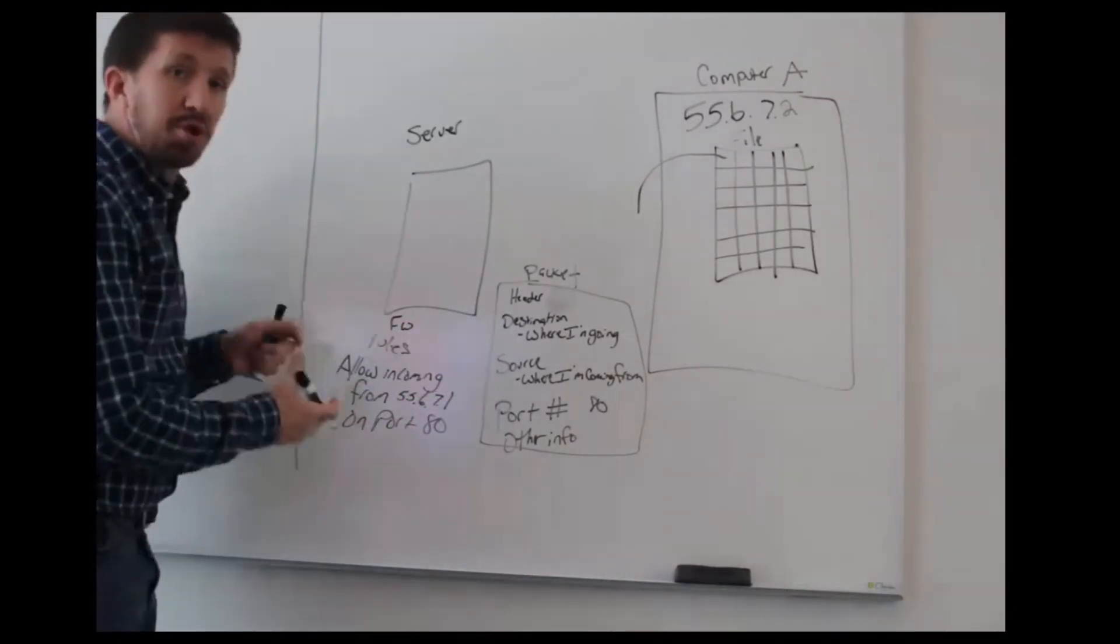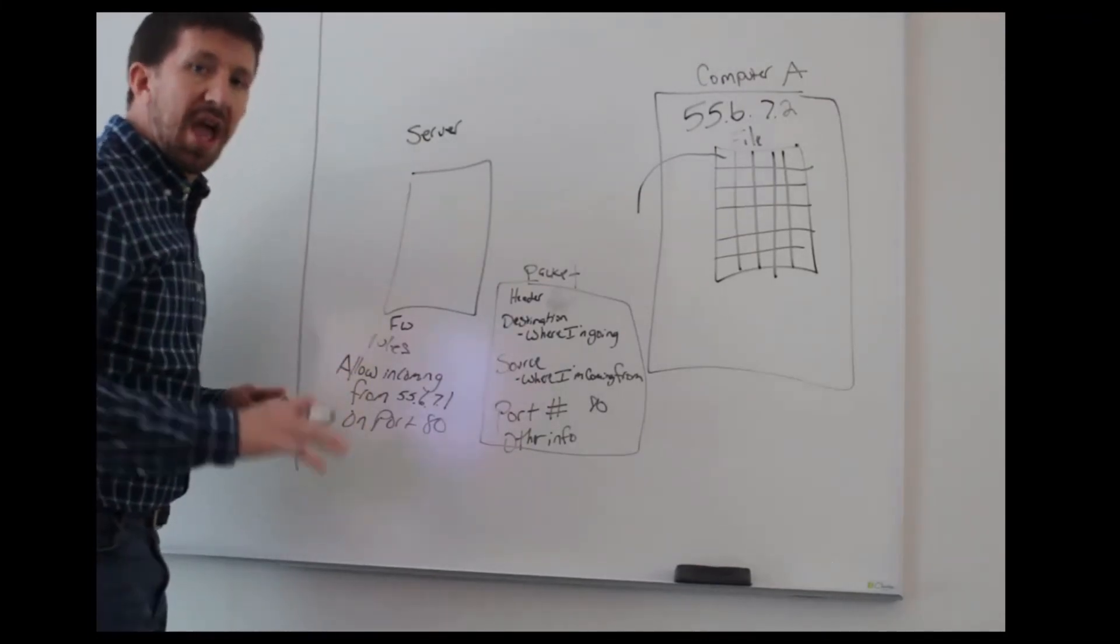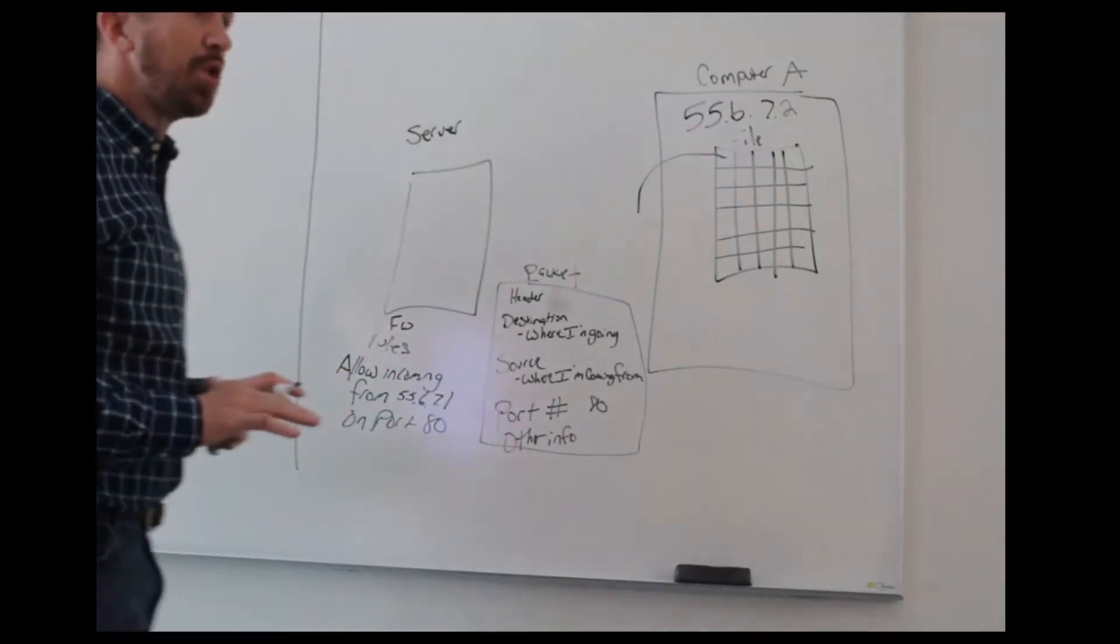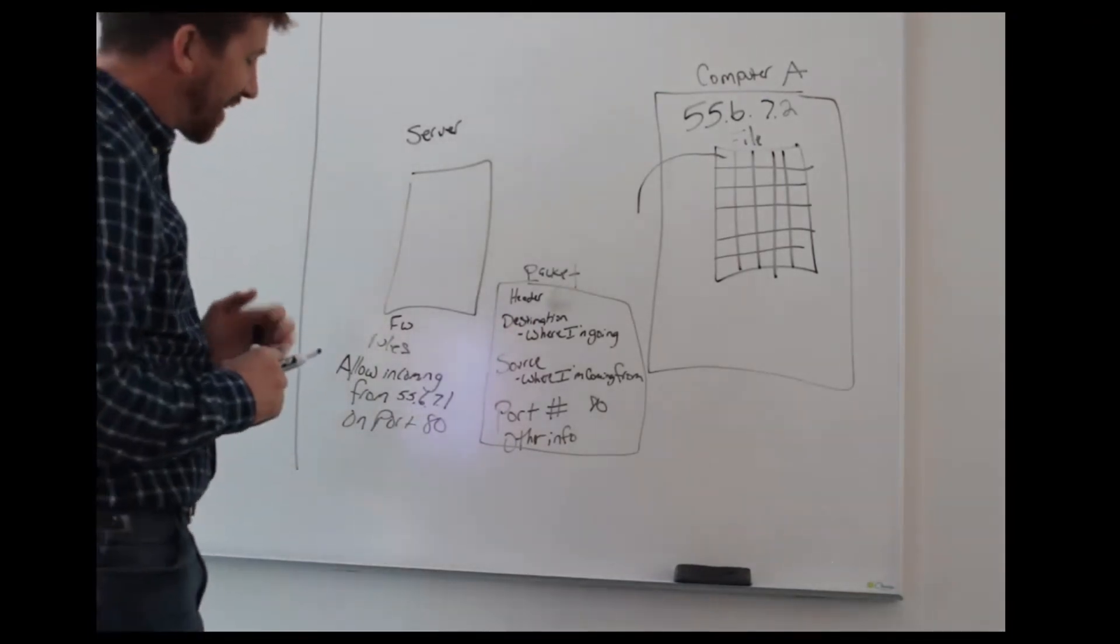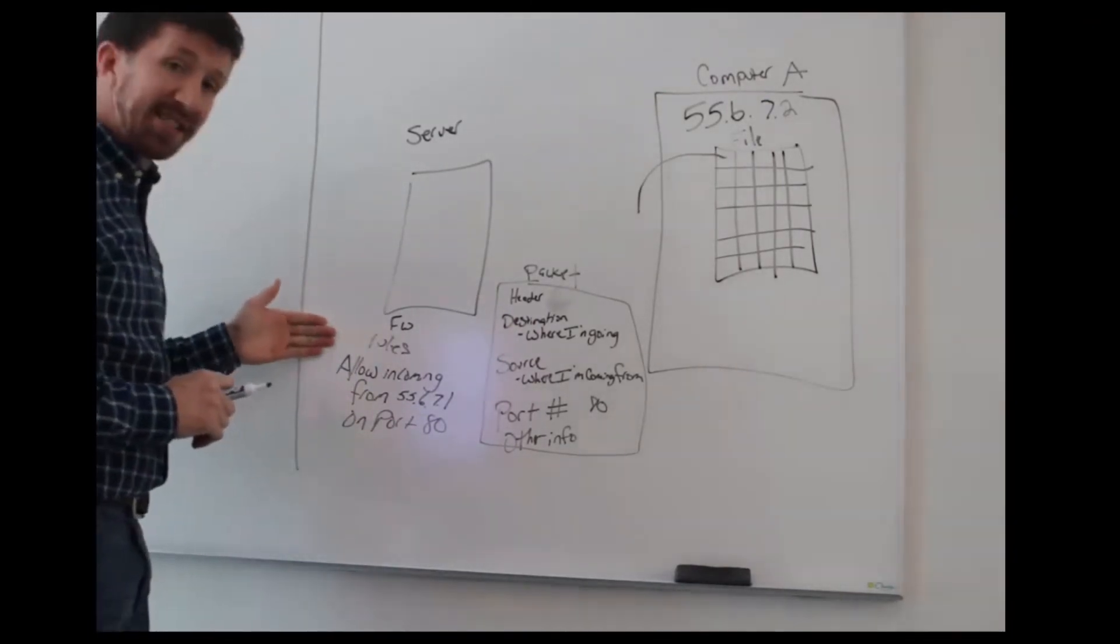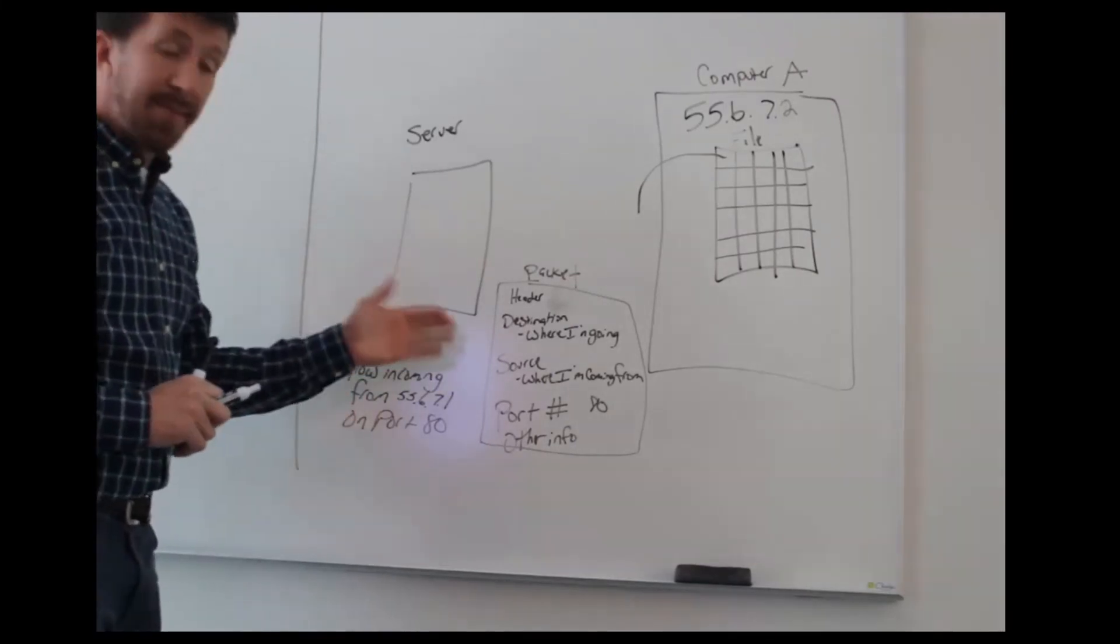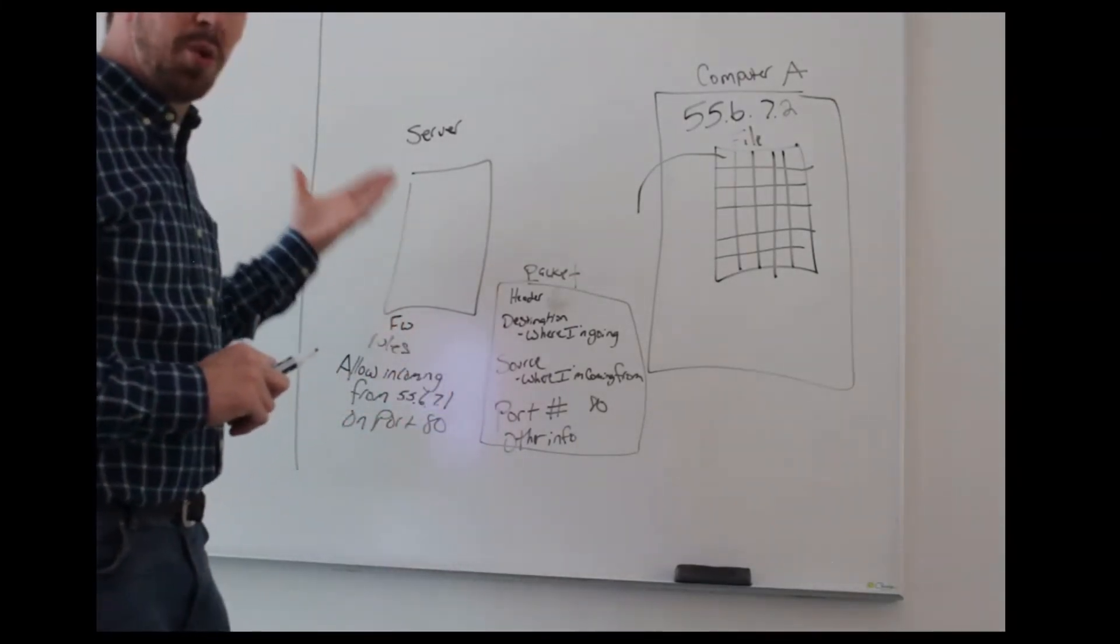And then the firewall looks at its basic set of rules. Whether it's stateless or stateful, both of them have rules. It just determines how those rules are updated and how it gets those rules. But it looks at its set of rules and says, am I allowed to allow this packet through? Yes or no.